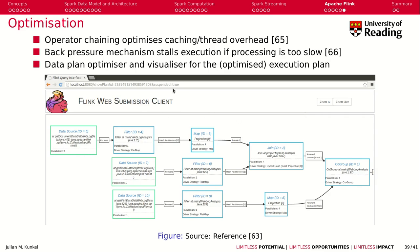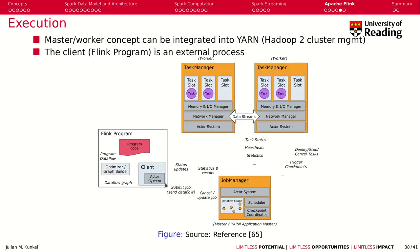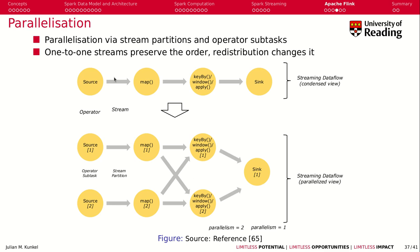Flink has a couple of optimizations. First, let me talk about the data plan optimizer and visualizer of the execution plan, which is really useful to understand what's going on. You can connect to the user interface via a web browser, and there you will find your dataflow graph — your DAG. Here we see an example. We can also get the optimized version of our execution plan, which may look slightly different than our initial plan.